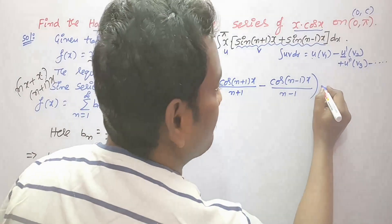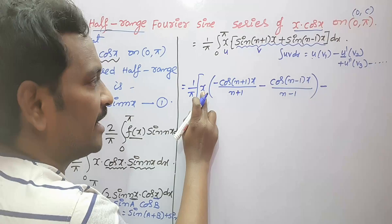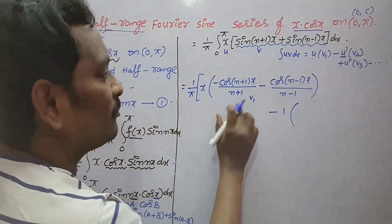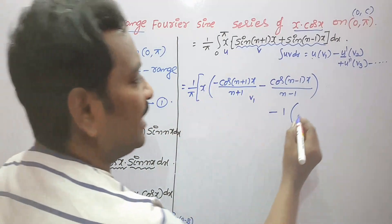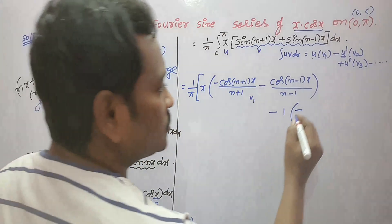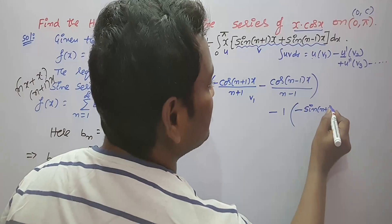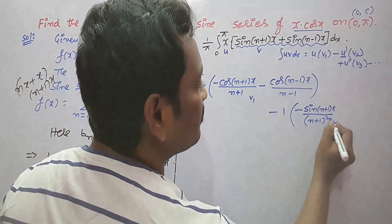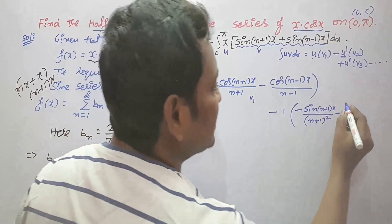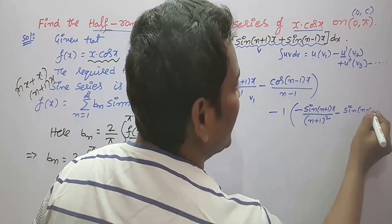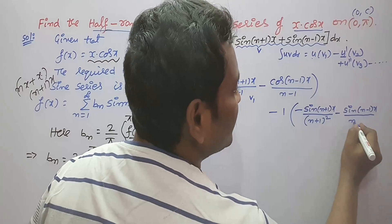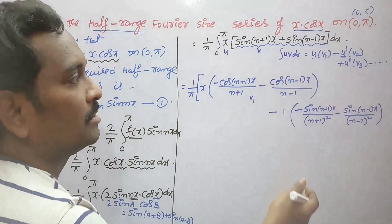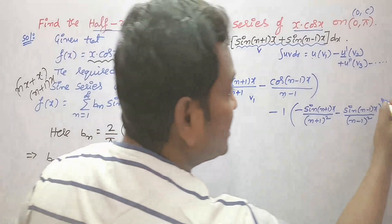The derivative of x is 1, so v₂ gives sin((n+1)x)/(n+1)² and sin((n−1)x)/(n−1)². The next derivative of 1 is 0, so the integration by parts process is completed.